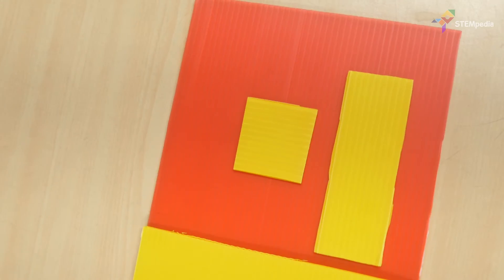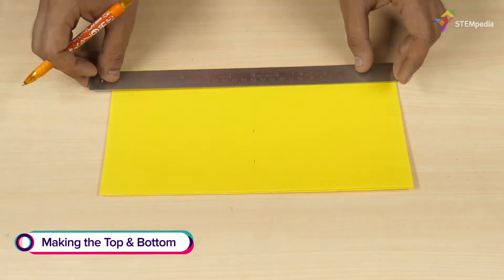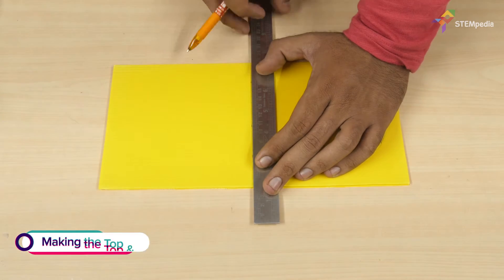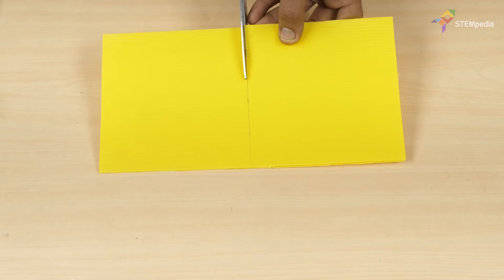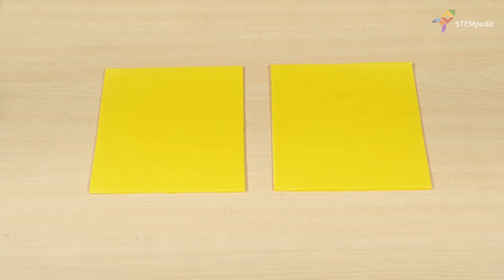Let's begin by making the parts of the safe box. Take a yellow corrugated sheet of dimension 30x15cm and draw a line in the center. Now cut along the line. The two halves will be the top and the bottom of the box.